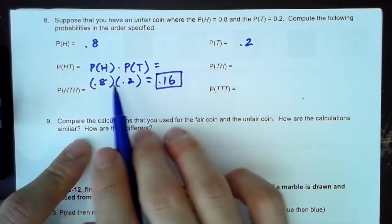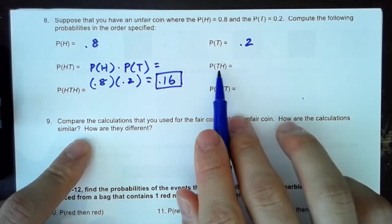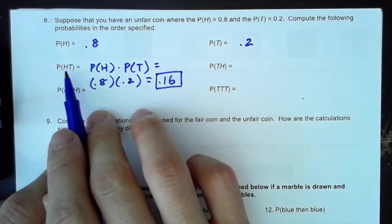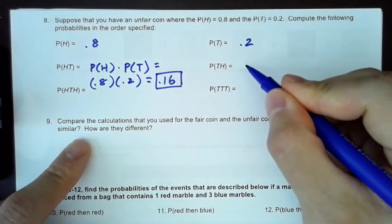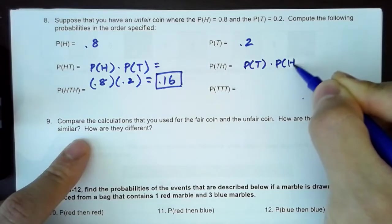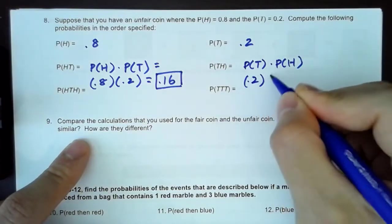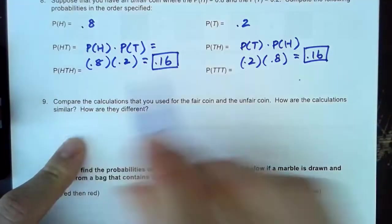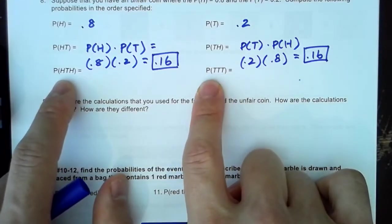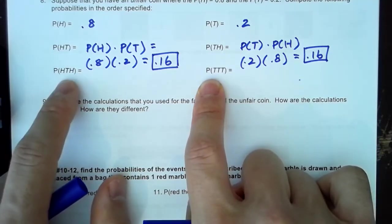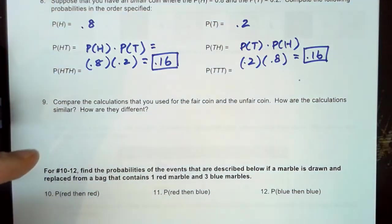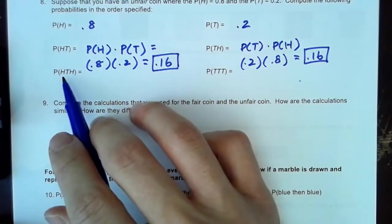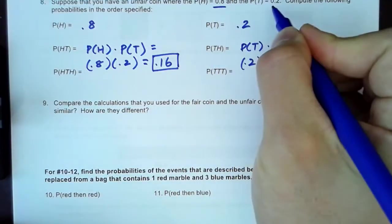I hope you're starting to realize that the order doesn't really matter — the probability of tails then heads should be the exact same as heads then tails. However, these two individual events are not the same anymore. In the previous example they were the same because both heads and tails had probability 0.5. In this case, heads is much more common than tails because this coin is not fair.